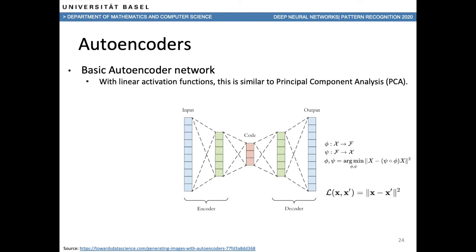The first architecture we'll be looking at is known as autoencoders. With the basic autoencoder network, if we have linear activation functions, it is essentially equal to principal component analysis, or PCA for short. PCA is a dimensionality reduction method which projects each data point onto only the first few principal components — the directions that maximize the variance of the projected data, ordered so that the first principal component has maximal variance.